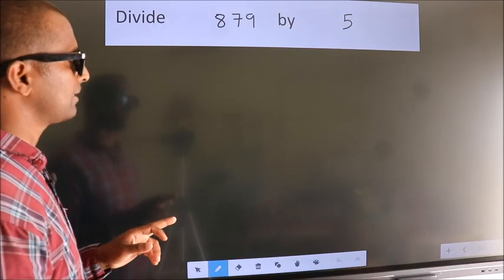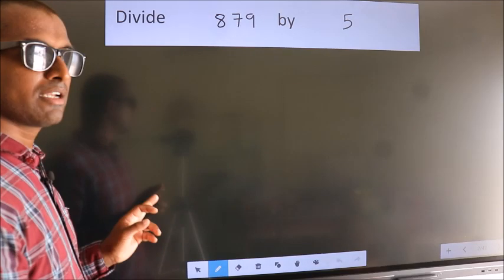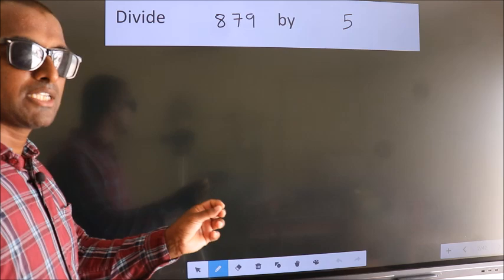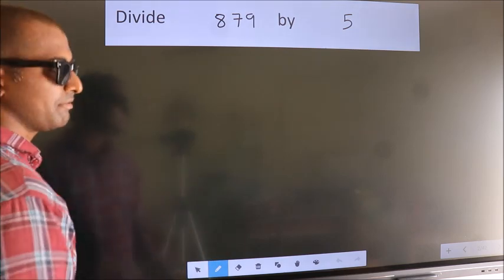Divide 879 by 5. To do this division, we should frame it in this way.